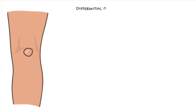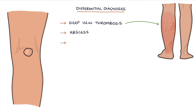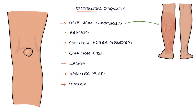The key differential diagnoses of a lump in the popliteal fossa are a deep vein thrombosis, an abscess, a popliteal artery aneurysm, a ganglion cyst, a lipoma, varicose veins, or even a tumour.